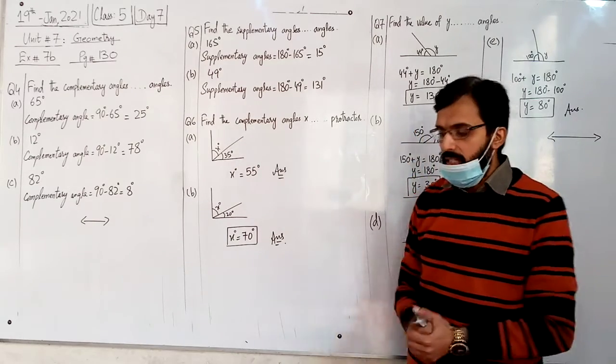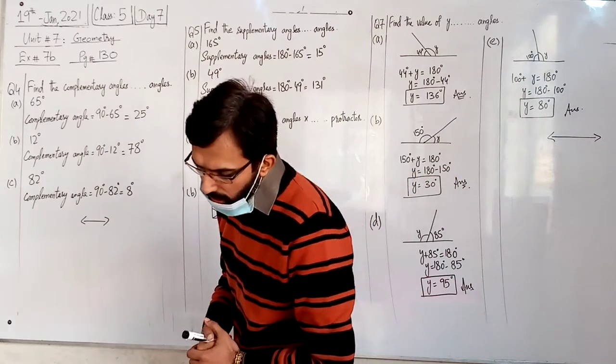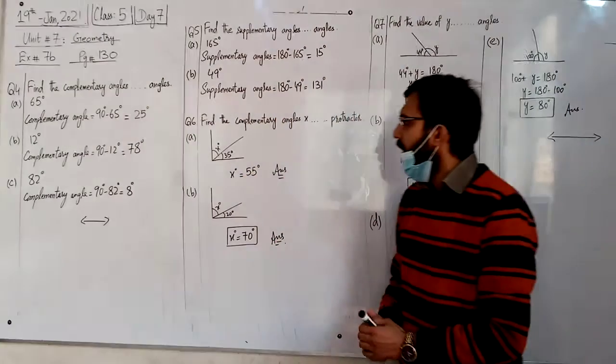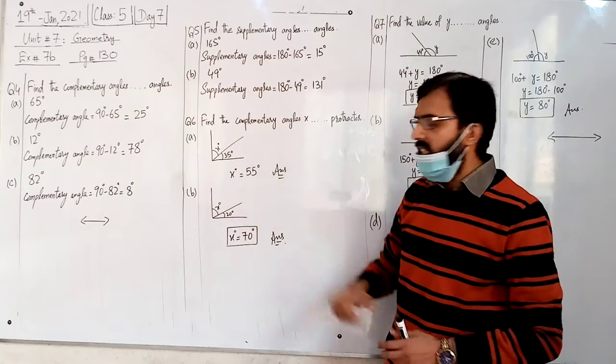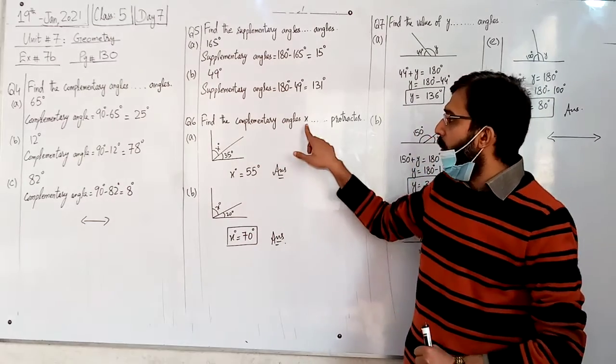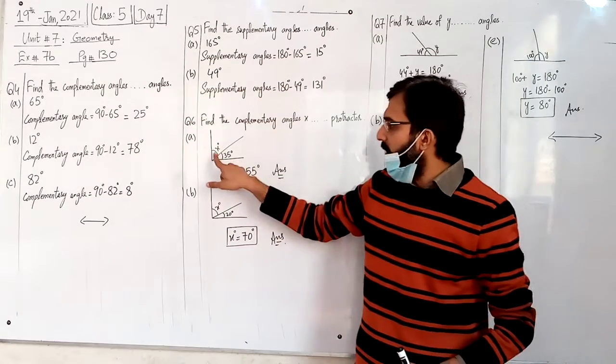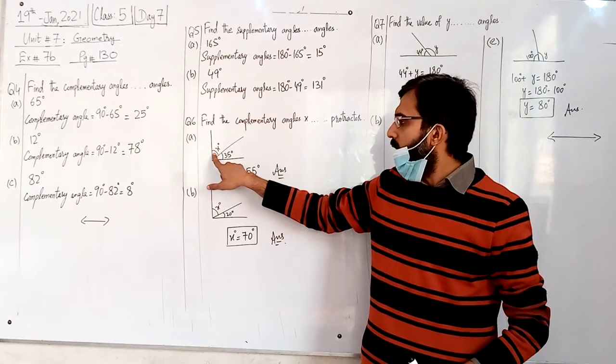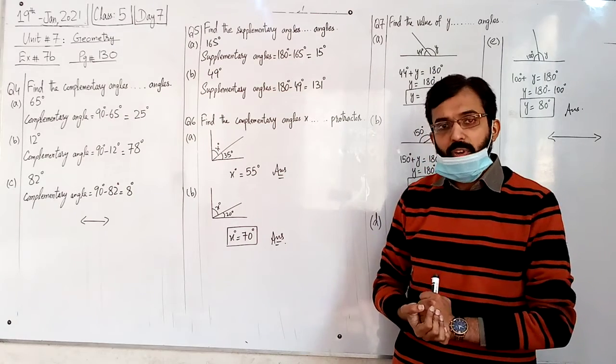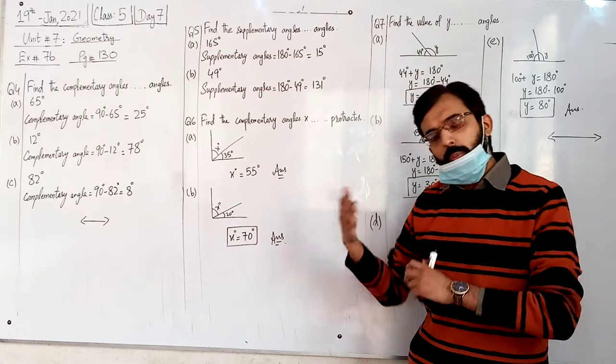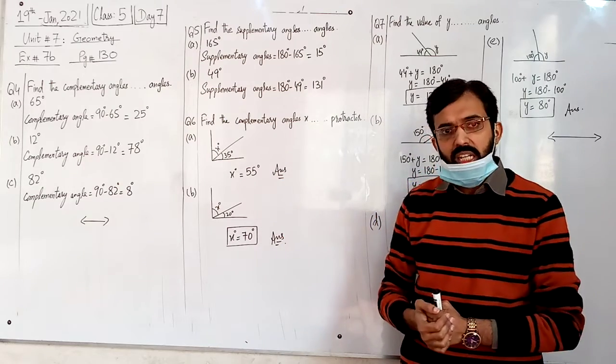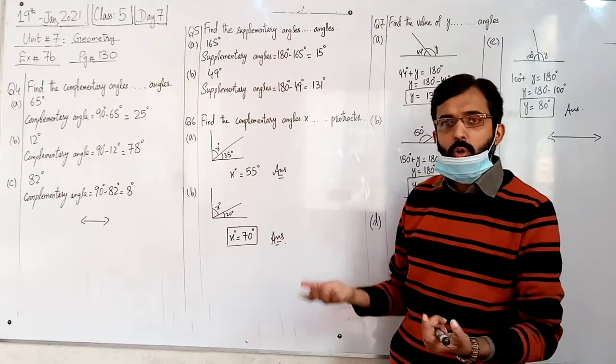Question number 6: Find the complementary angle x in each of the following right angles using a protractor. I have to make complementary angles and find the x value. You can find two methods: normally find it, or use the protractor to find it.